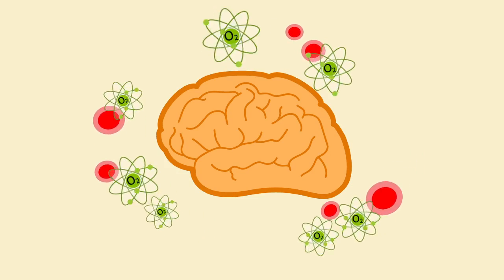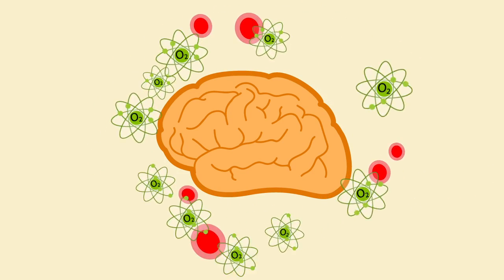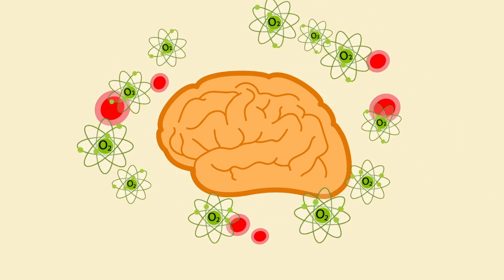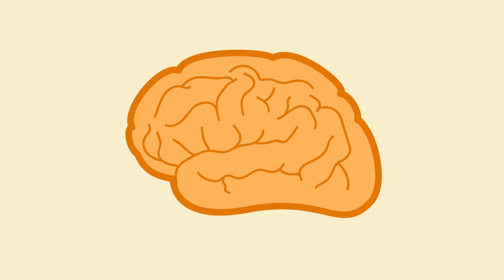Increased oxygen in the brain as a result of increased blood flow creates new cells in the parts of your brain that control learning and memory.